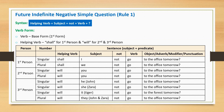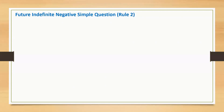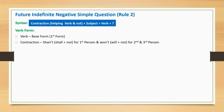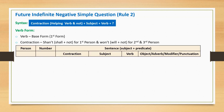In the next slide, I will explain another way of making future indefinite negative simple questions. As per rule 2, the sentence starts with a contraction, followed by subject, main verb, and a question mark. The contraction 'shan't' is applicable for first person, and 'won't' is applicable for second and third person.